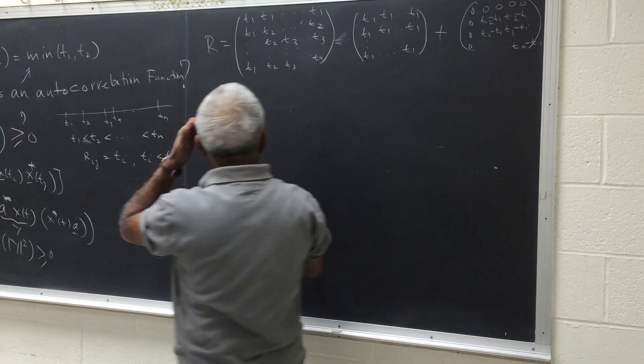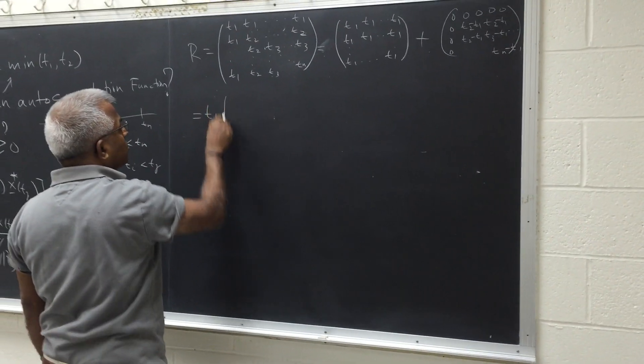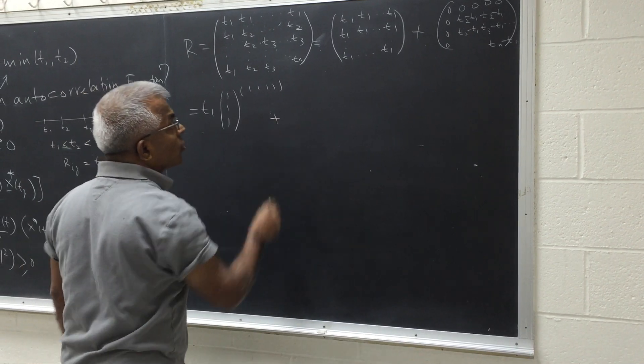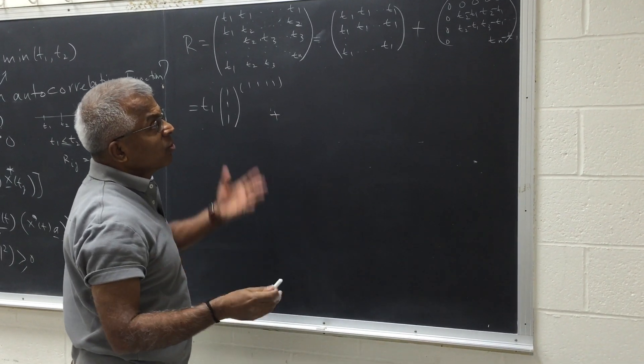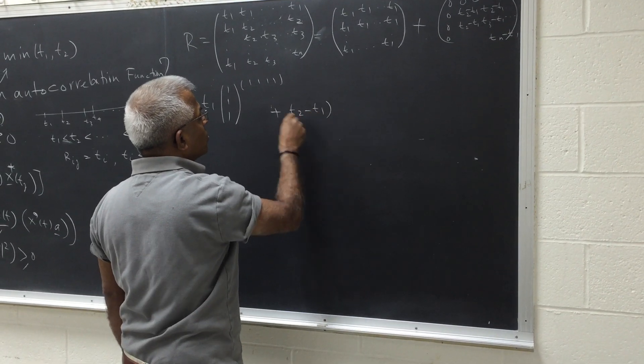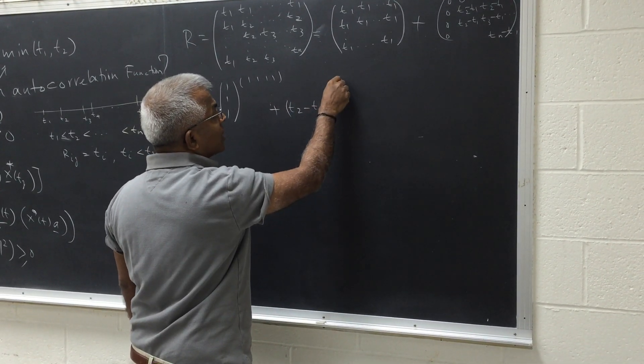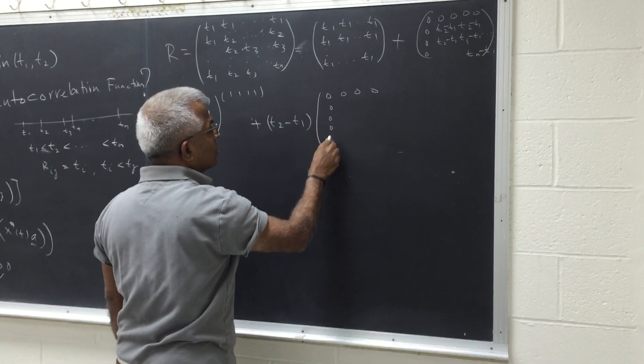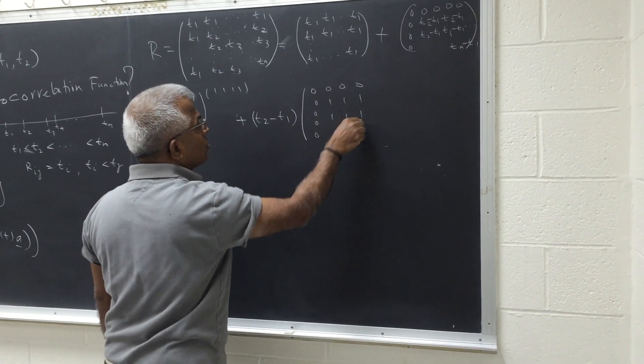But notice that the first one you can write it as t1 multiplied by this. So plus, now I'm going to pull out the t2 minus t1. So if I pull out t2 minus t1, then notice that I can write this as the, this is of course all zero, but then you have all this one.